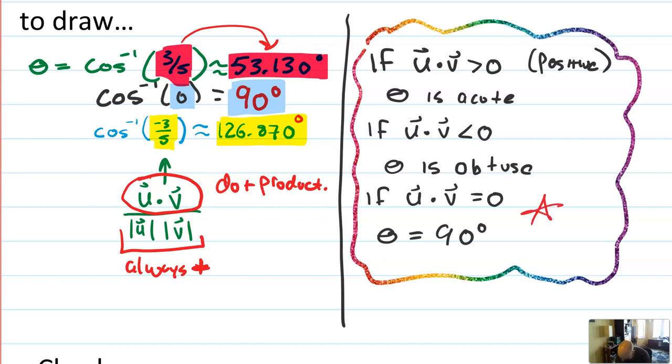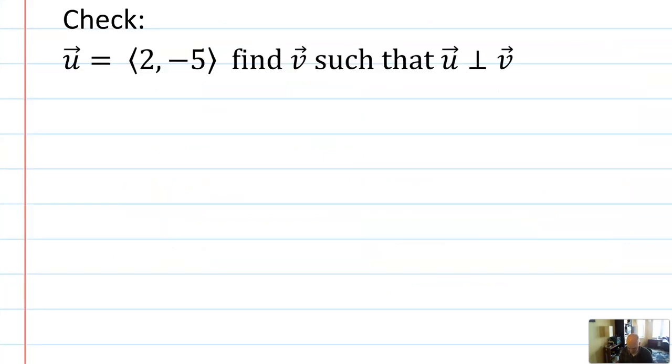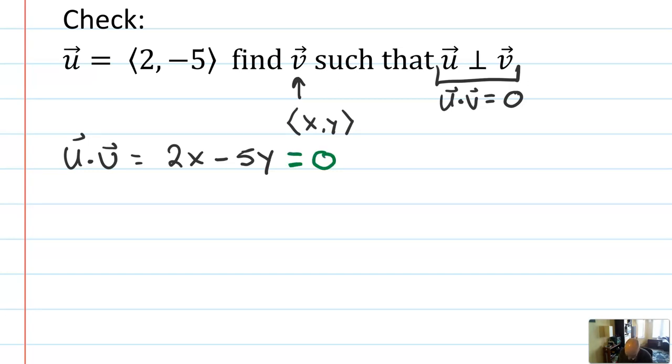Specifically, this last one shows up all the time. And here's an example of a problem that might use it. So say I have a vector two comma minus five, find v such that u is perpendicular to v. Now, obviously, one way I could do this is to sketch out the vector, find its slope, try to draw another vector, but I don't need to. u is 2, -5. I'm going to let v be vector x comma y. You can pick any letters you want. Then u dot v will equal 2x minus 5y. And if u is going to be perpendicular to v, then u dot v must equal zero. So I'm going to take 2x minus 5y and set it equal to zero.